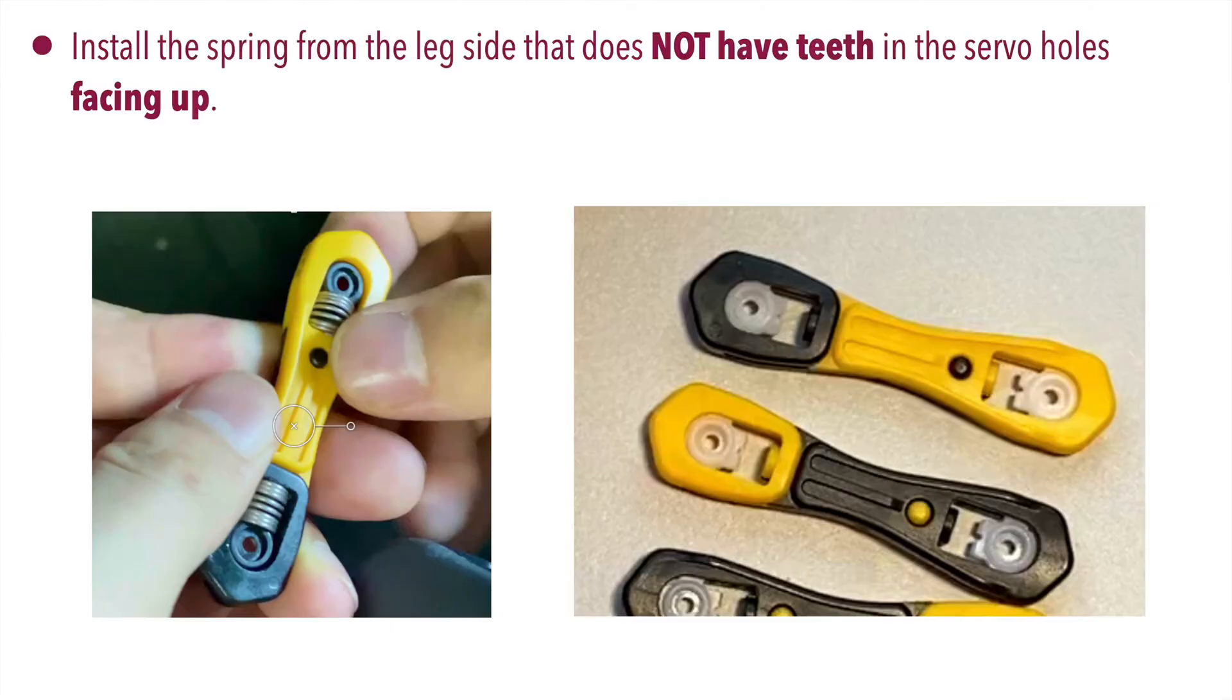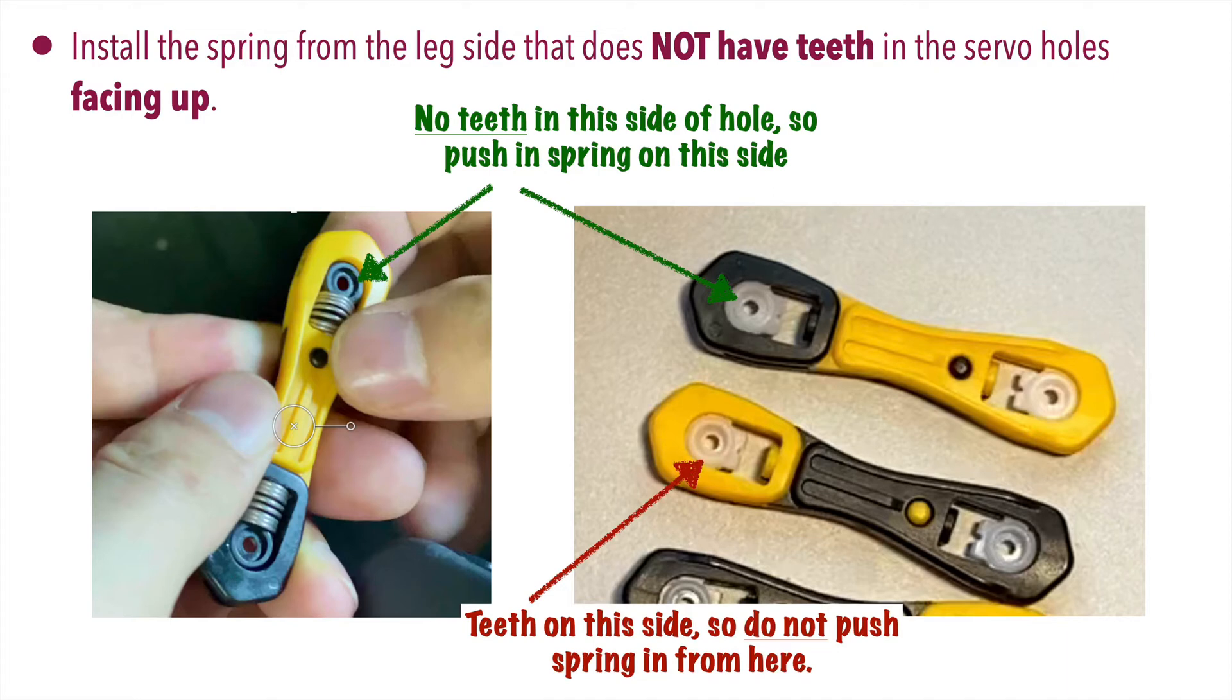First, make sure to install the spring in the leg side that does not have the teeth in the servo holes facing up, so you want to make sure that those teeth holes are facing down. This will give you the most room to properly set the springs.